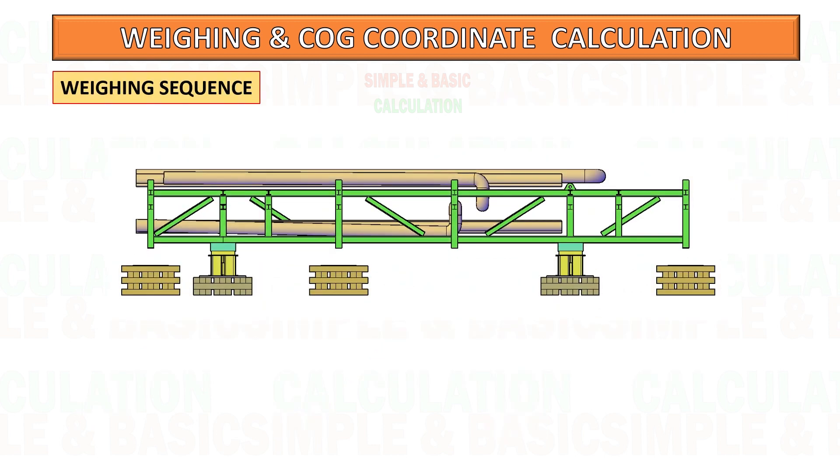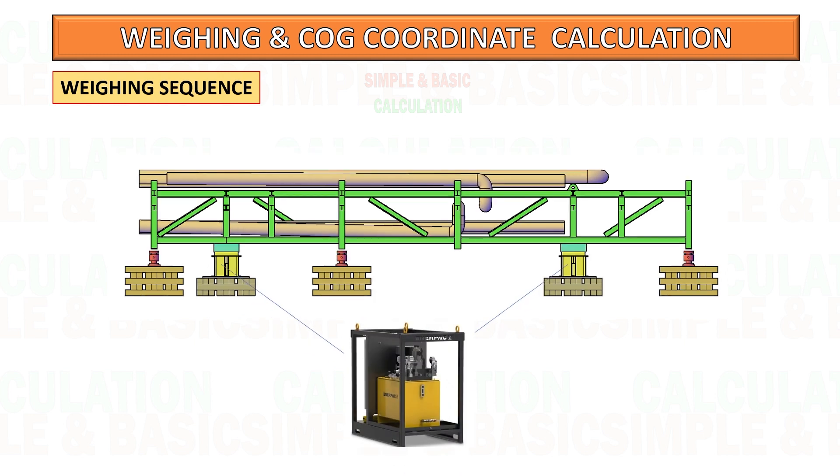This is the method we will use for weighing of cargo using hydraulic jack. We will jack up the cargo from its support to be able to place the load cell underneath the weighing point of the cargo.